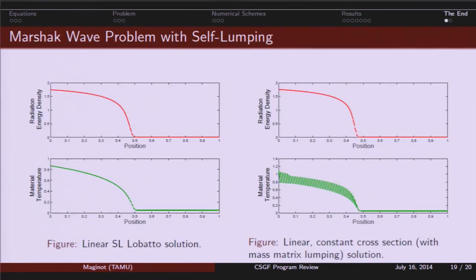And, when I put the self-lumping scheme into the same radiative transfer problem, I solve my problem. Radiation is smooth, that was given before, temperature is smooth, and all is right in the world.